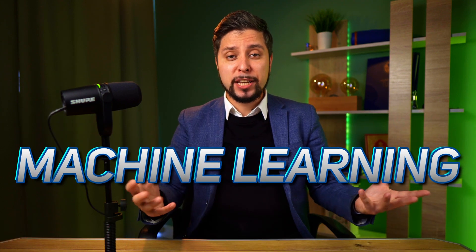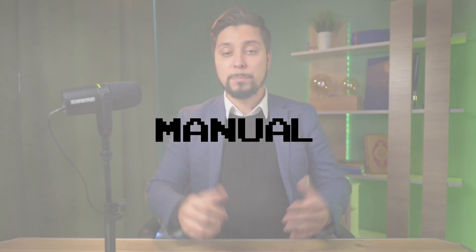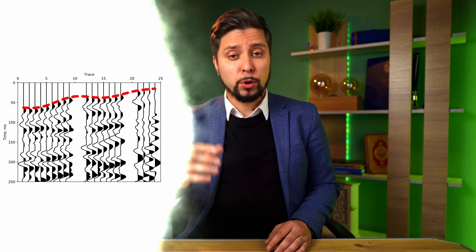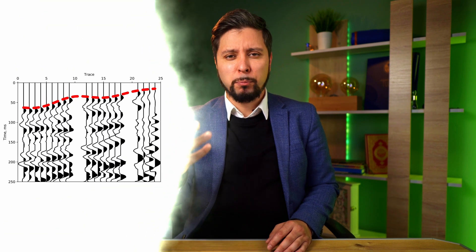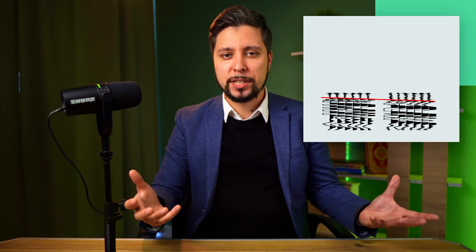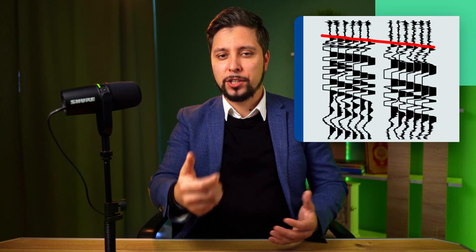I will talk about the manual, automatic, and machine learning-based picking. The simplest method is manual picking. We can select the first arrivals even for traces with poor quality or that are missing — we'll make use of the nearby traces and get the job done.